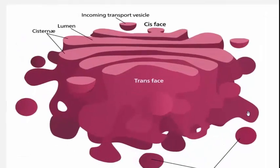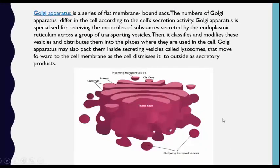These lysosomes move toward the cell membrane as the cell dismisses them to the outside as secretory products. Let us zoom in to see the Golgi apparatus — this is the cell, with incoming transport vesicles and other components of the Golgi apparatus.